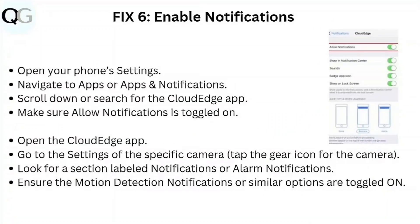Step six: enable notifications. Open your phone settings, navigate to apps or app and notification, scroll down or search for the Cloud Edge app, and make sure allow notifications is toggled on. Then open the Cloud Edge app, go to settings of the camera, look for a section labeled notifications or alarm notification, and ensure the motion detection notification or similar options are toggled on.